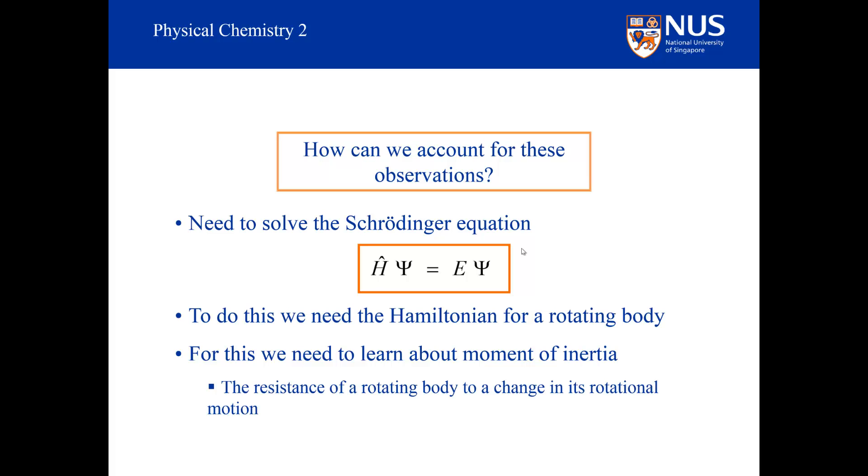What is it, you may ask? Well, it is simply the resistance of a rotating body to a change in its rotational energy. It is directly analogous to mass in linear motion. Mass represents the resistance of a linear moving body to a change in its linear motion. We will see that this analogy will help us construct the Hamiltonian for a rotating system.